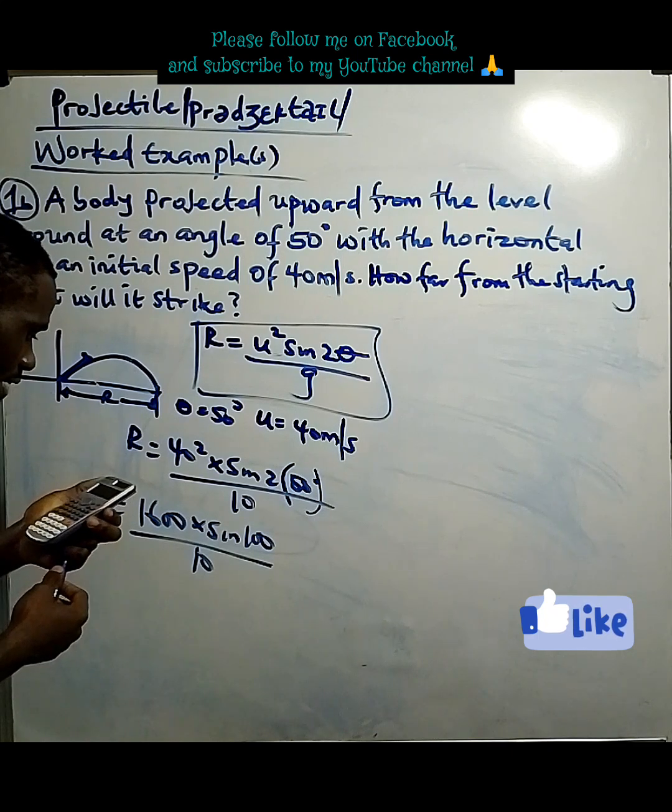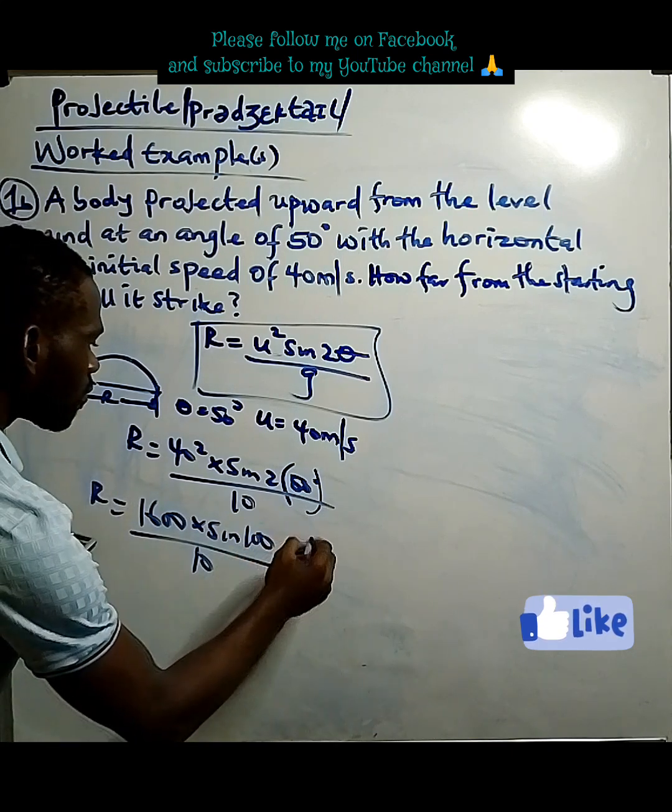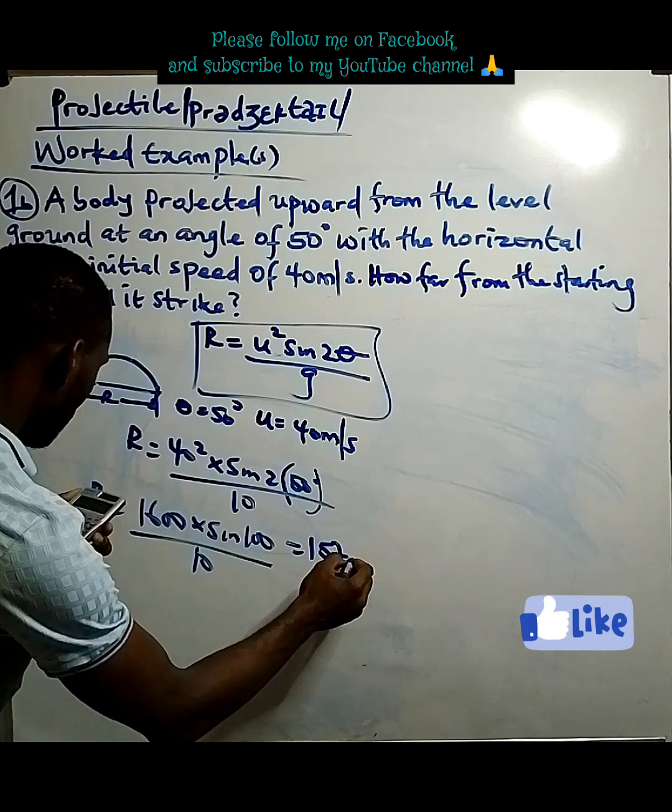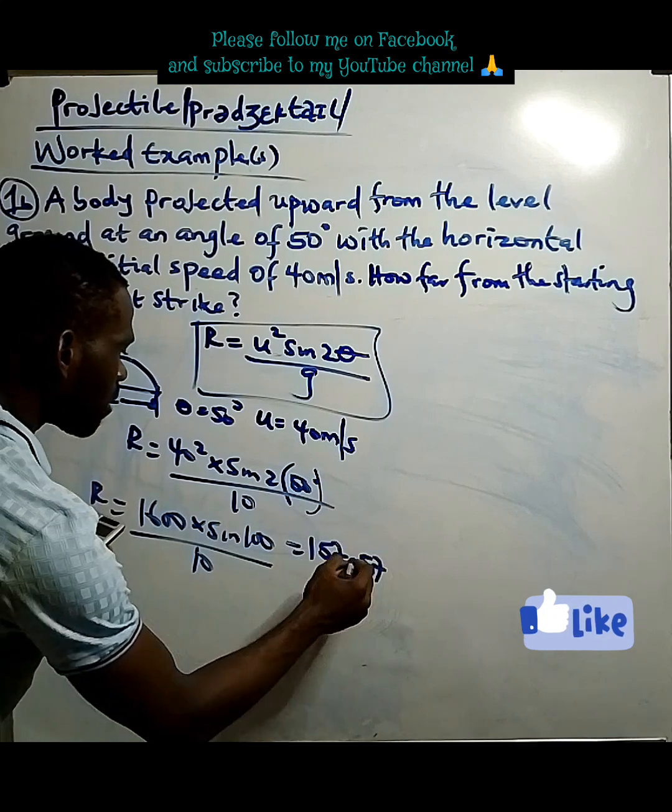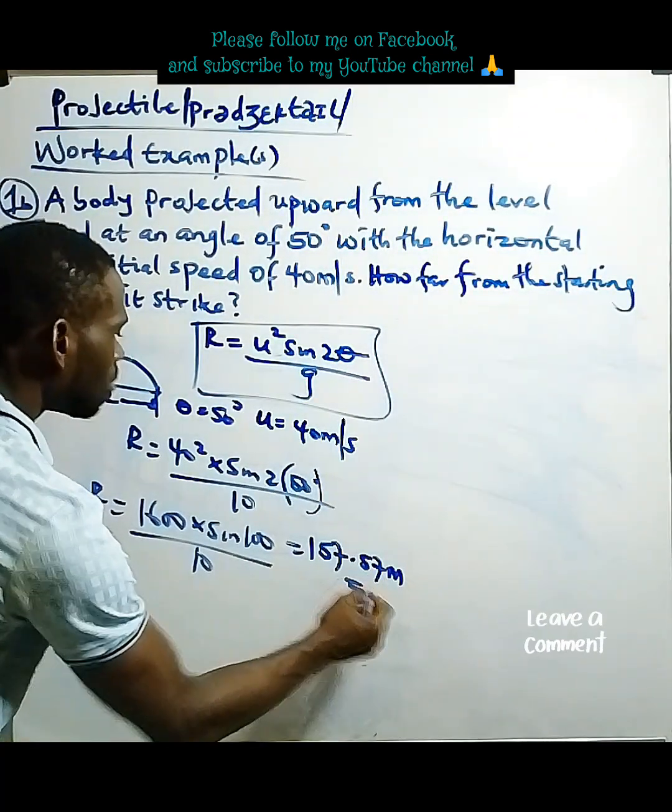We have 157.569. That is 157.57 approximately to 2 decimal places, meters. It's as simple as ABC.